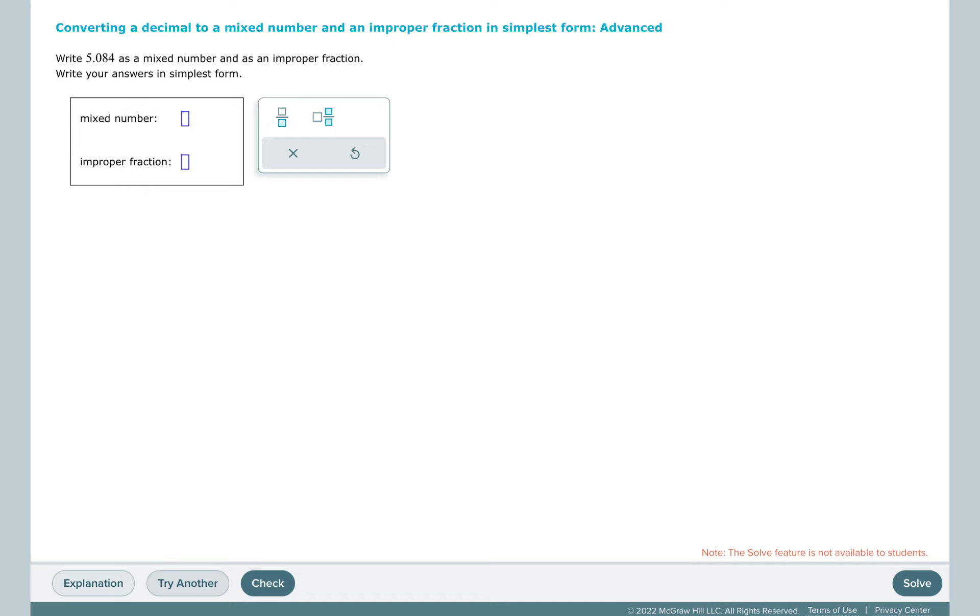So for this, we're going to change 5.084 to a mixed number and an improper fraction, both in simplest form. Read it with place value, 5 and 84 thousandths. 84 thousandths is not in simplest form, and 84 and 1,000 are both even, so I'm just going to divide by 2 over 2. That's going to give me 42 over 500, and we again have two numbers that are even. I'm going to continue dividing by 2 over 2. That gives me 21 over 250.